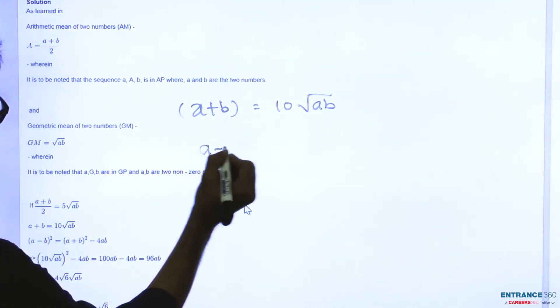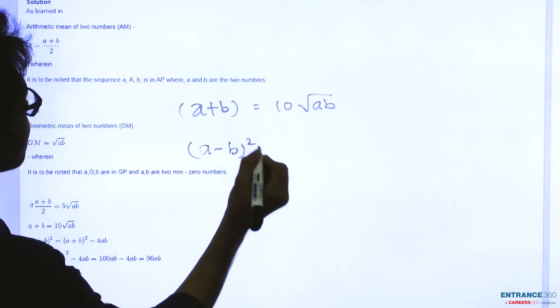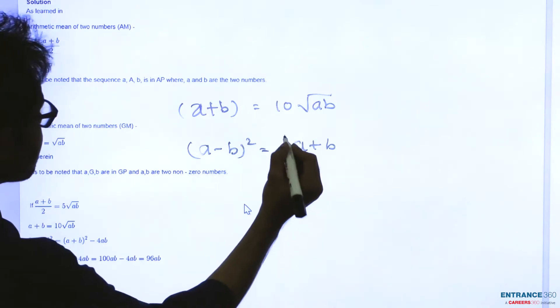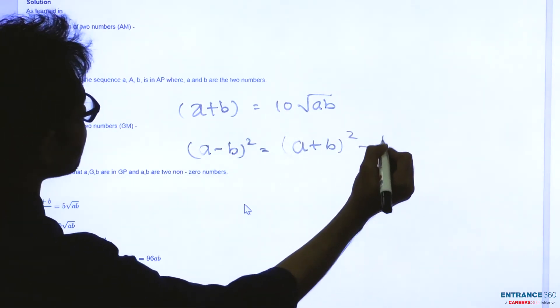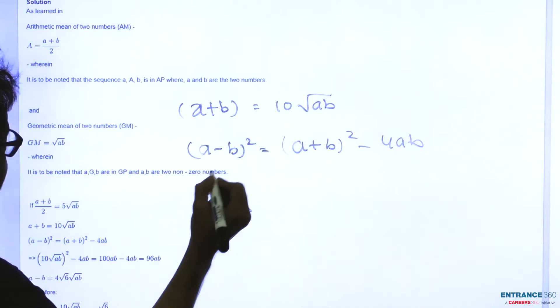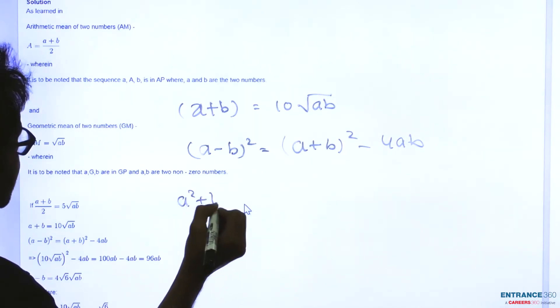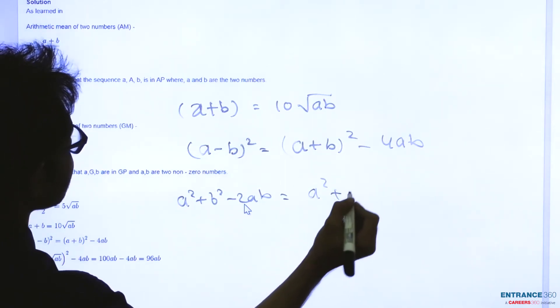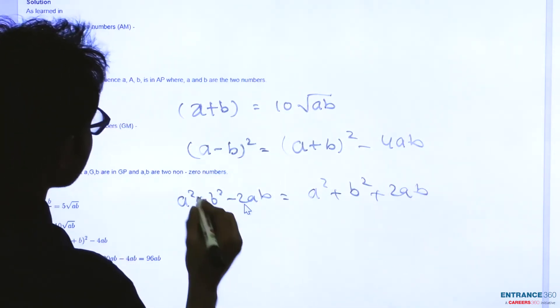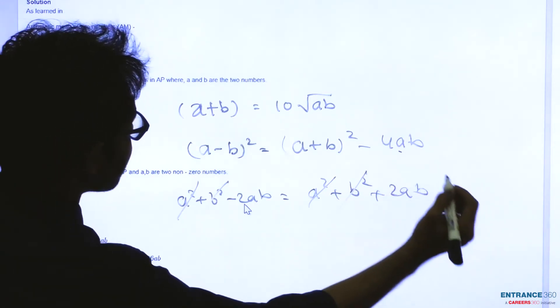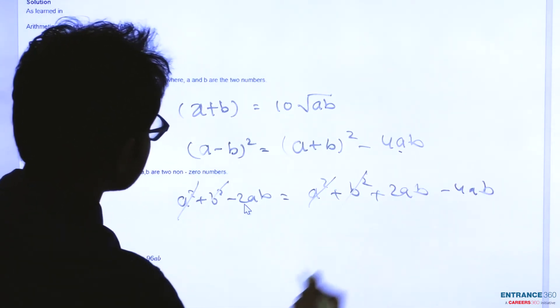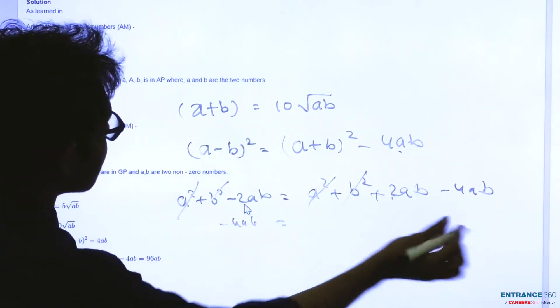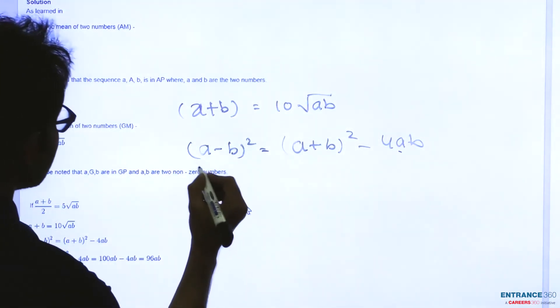So (A-B)² you know that this is equal to (A+B)² - 4AB. How? (A-B)² is A² + B² - 2AB, whereas (A+B)² is A² + B² + 2AB. So this cancels out, minus 4AB here. We first find the value of this.